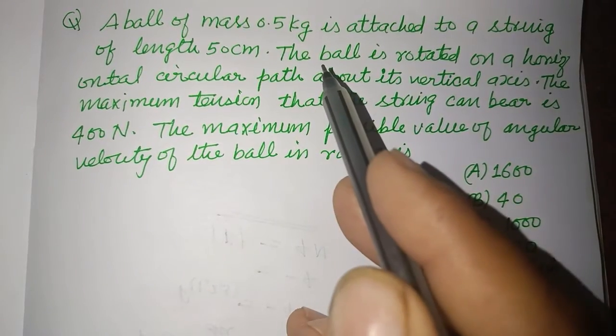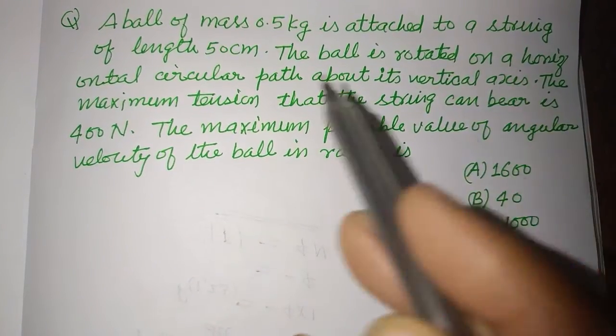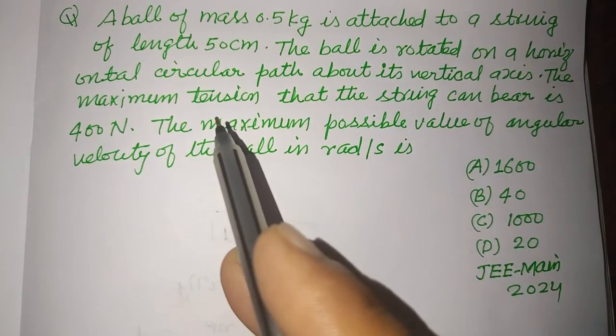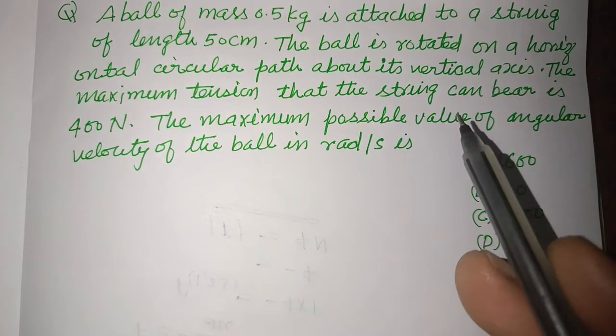A ball of mass 0.5 kg is attached to a string of length 50 cm. The ball is rotated on a horizontal circular path about its vertical axis.